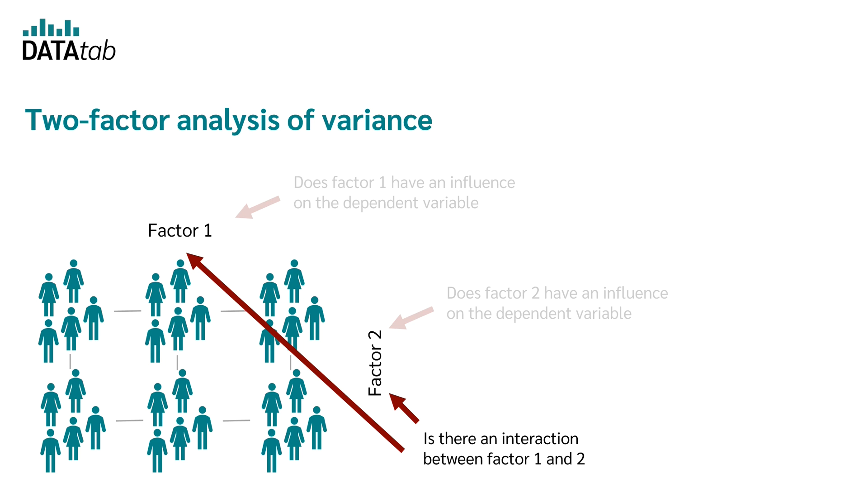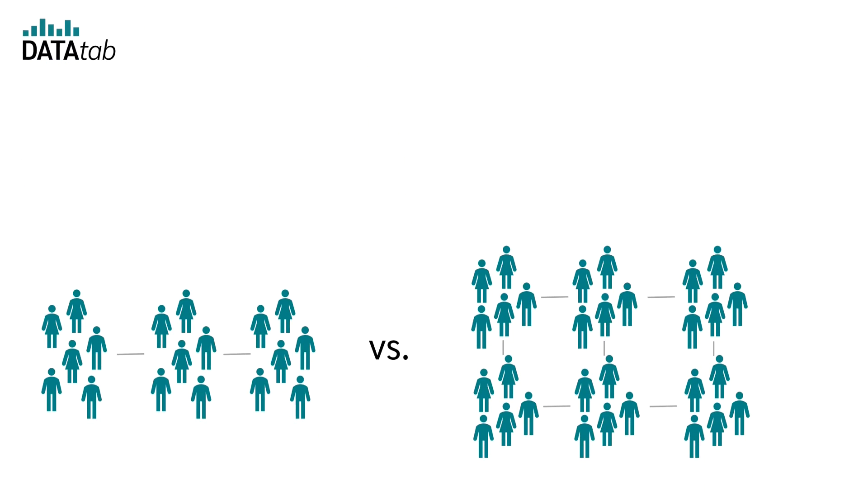Therefore, in the case of single-factor analysis of variance, we have one factor from which we create the groups. In the case of the two-factor analysis of variance, the group results from the combination of the expression of the two factors. If we have a factor or variable with three expressions and one with two expressions, we get a total of six groups that we want to compare.